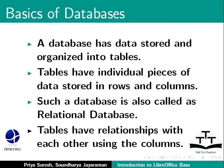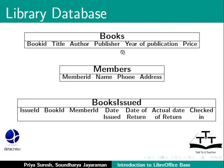Let us consider a simple database for a library. A library is a collection of books, and books can be issued to members of the library. A book can have attributes such as a title, an author, a publisher, year of publication, and a price. Similarly, a library member has a name, phone number, and an address. The library issues books to its members only.